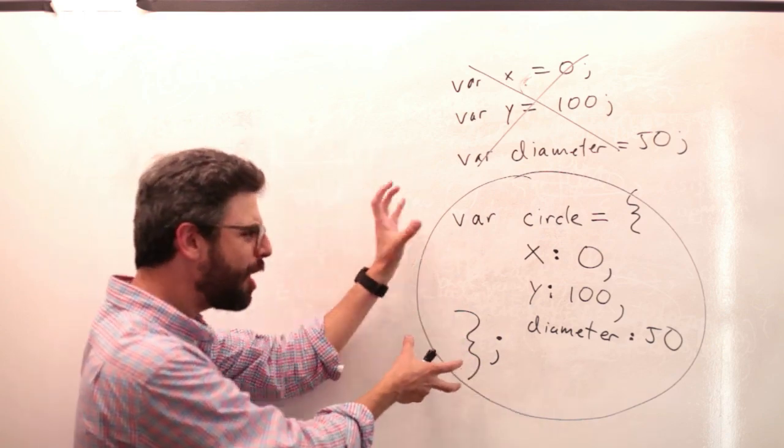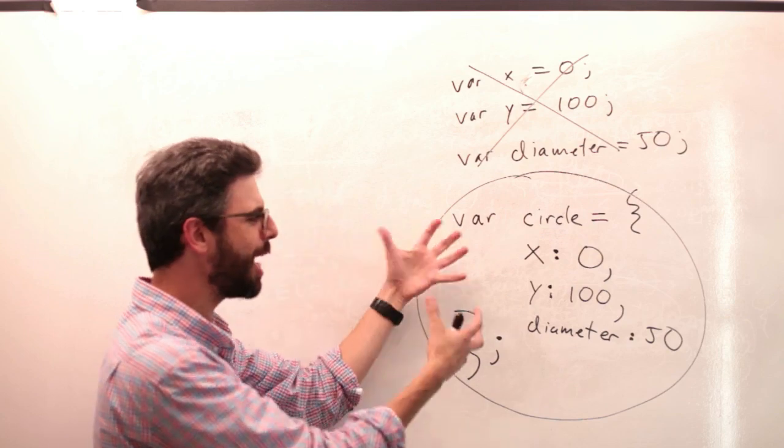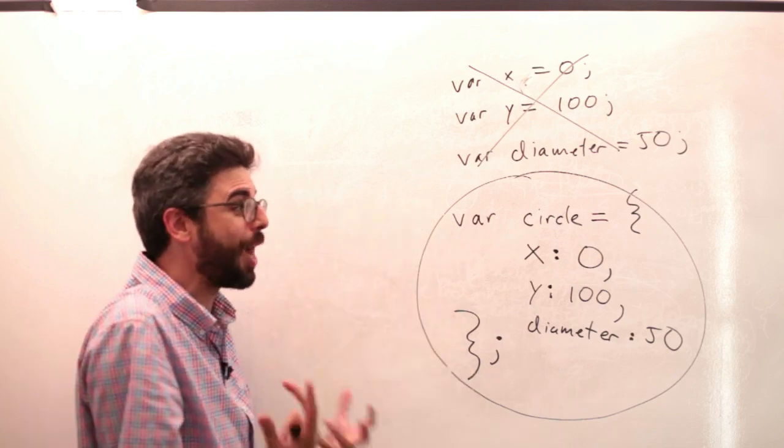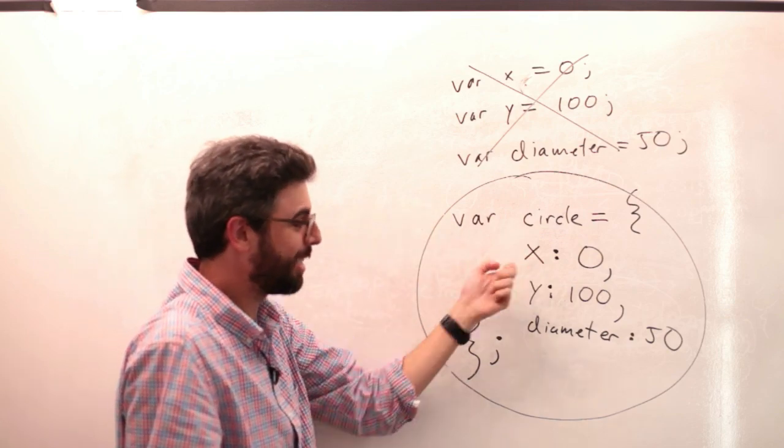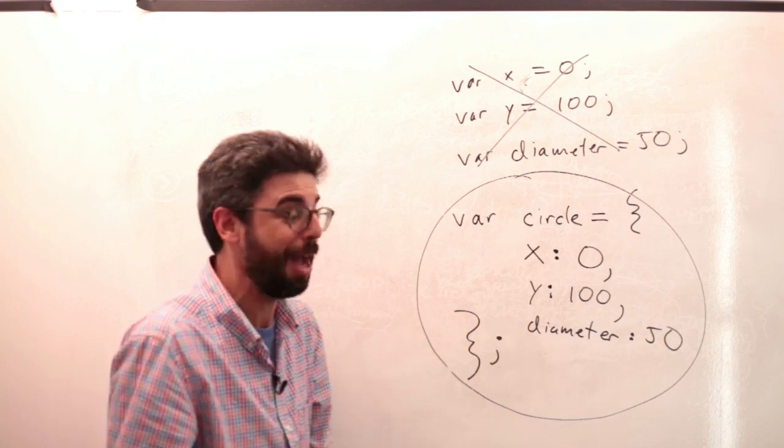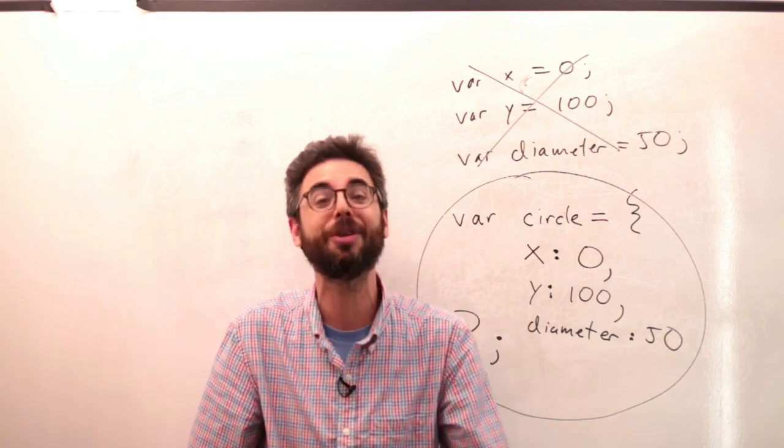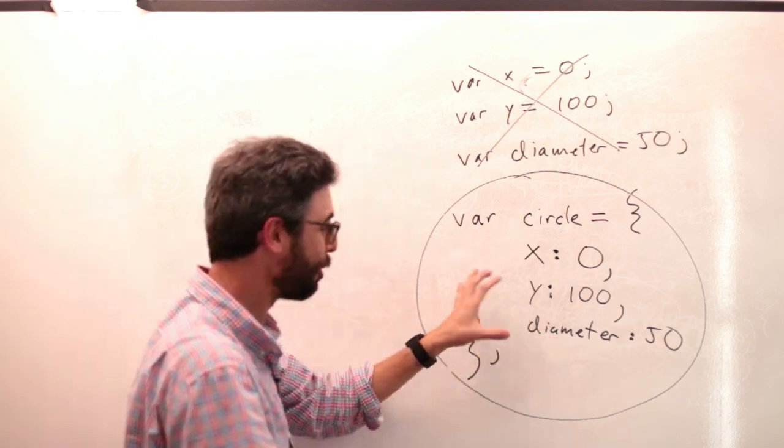But right now, you can think of, there's my circle object, and I'm visualizing the circle object on the screen. I'm visualizing its data. Its X is 0, its Y is 100, and its diameter is 50. By the way, I'm not using these terms by accident. What's super exciting about this is learning this. I'm not going to get to this for many, many videos.